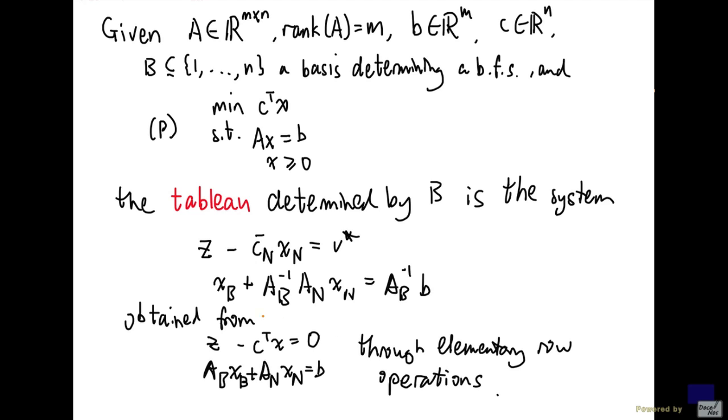obtained from the system z minus c transpose x equal to 0, A_B times x_B plus A_N times x_N equal to b through elementary row operations.